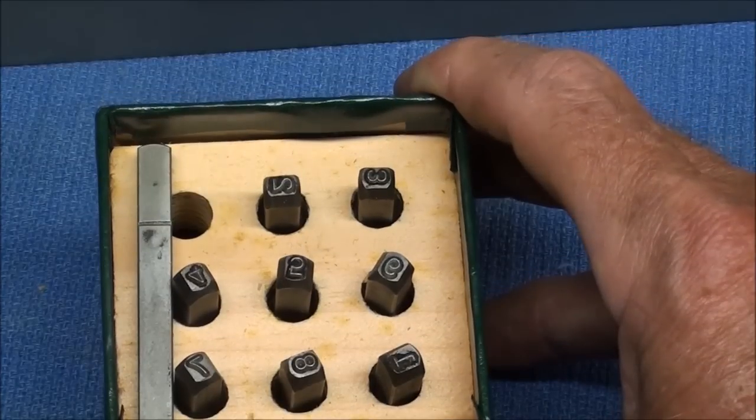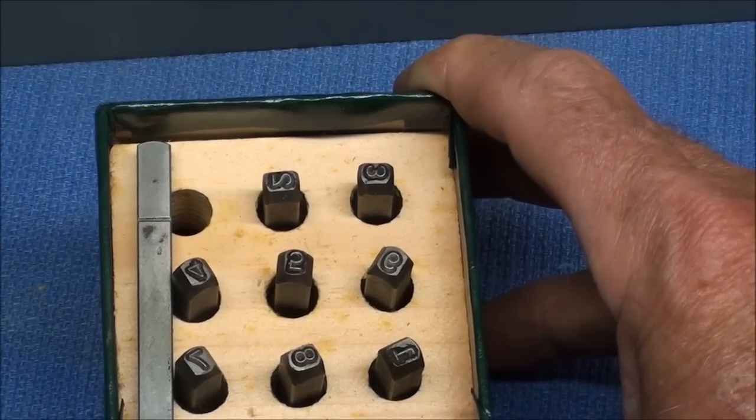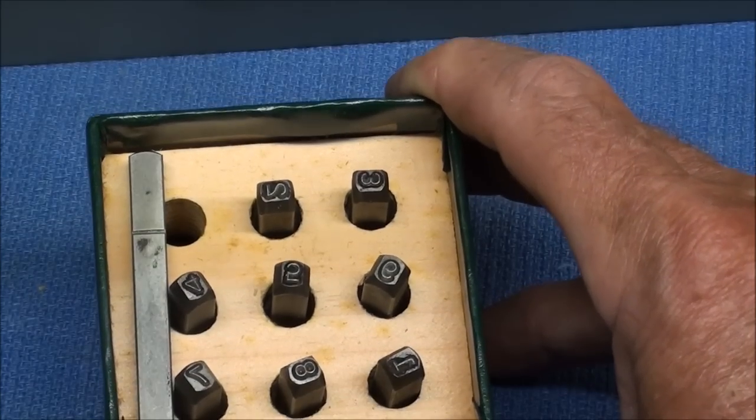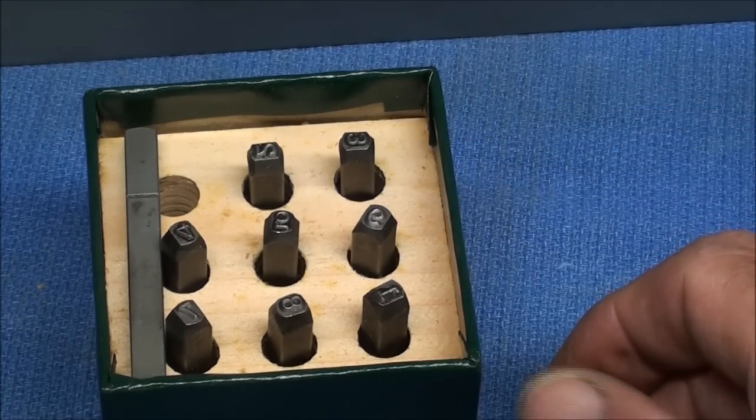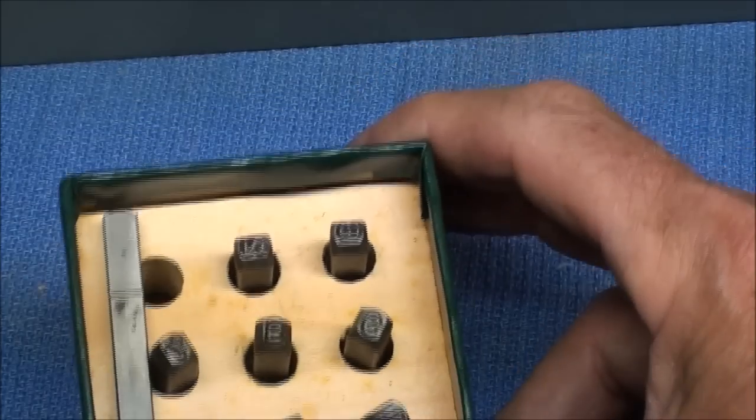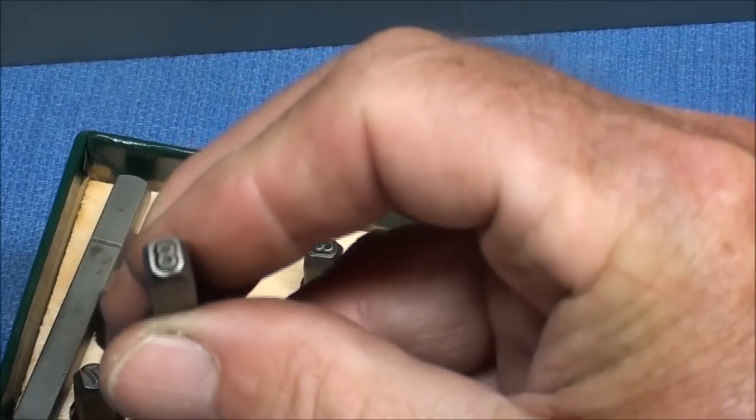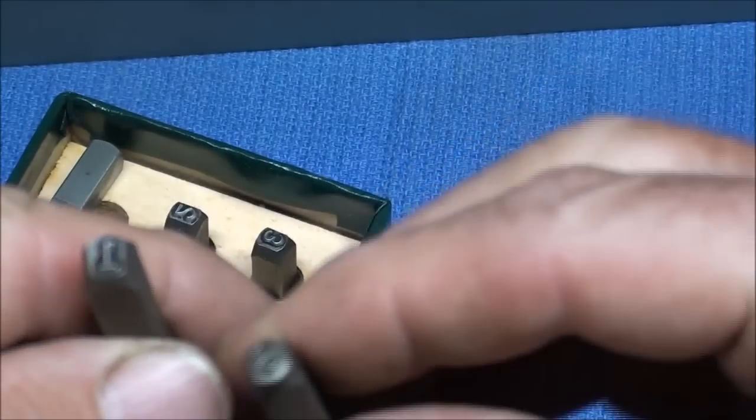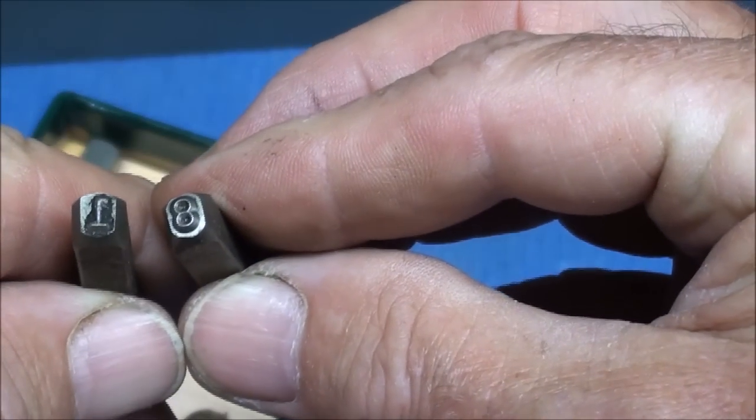Now this is a nice sharp set because they're new. If you have an older set and they're beat up and they're dull—and you know in the high school often they were dull because the kids would stamp a number or a name or something on a hardened steel ruler, thereby ruining both the ruler and the stamp—so if you got a dull one, you got to hit it harder than you would with a sharp one. Similarly, you have to strike a number eight harder than you would strike a number one to get the same depth impression. So all of those things need to be considered here when you're doing this job.